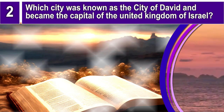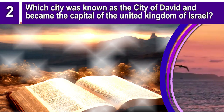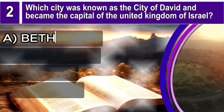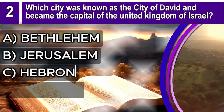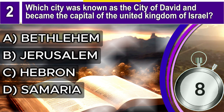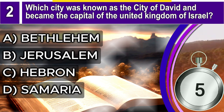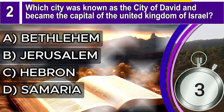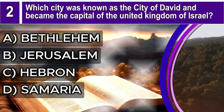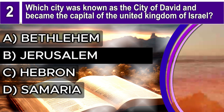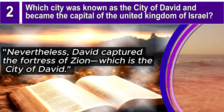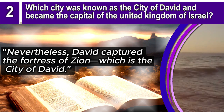Question 2. Which city was known as the City of David and became the capital of the United Kingdom of Israel? A. Bethlehem, B. Jerusalem, C. Hebron, D. Samaria. The correct answer is B. Jerusalem. 2 Samuel 5, verse 7 says: Nevertheless, David captured the fortress of Zion, which is the city of David.